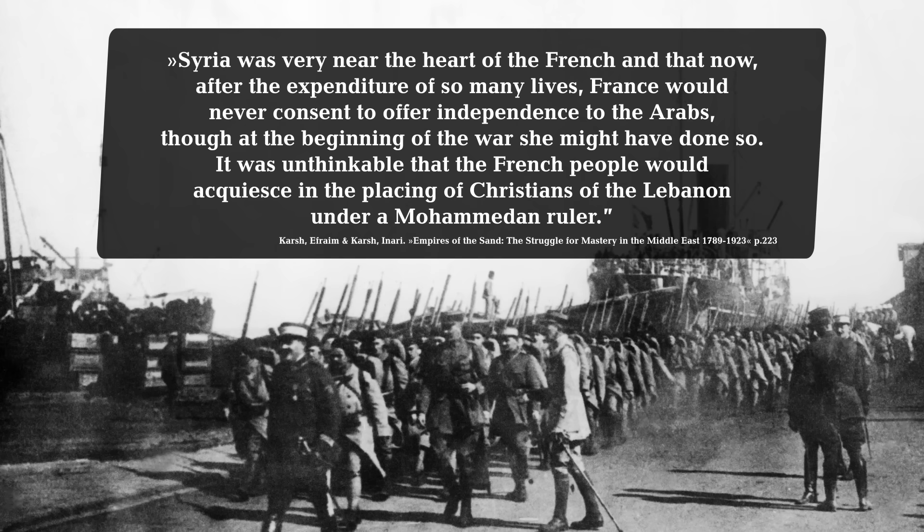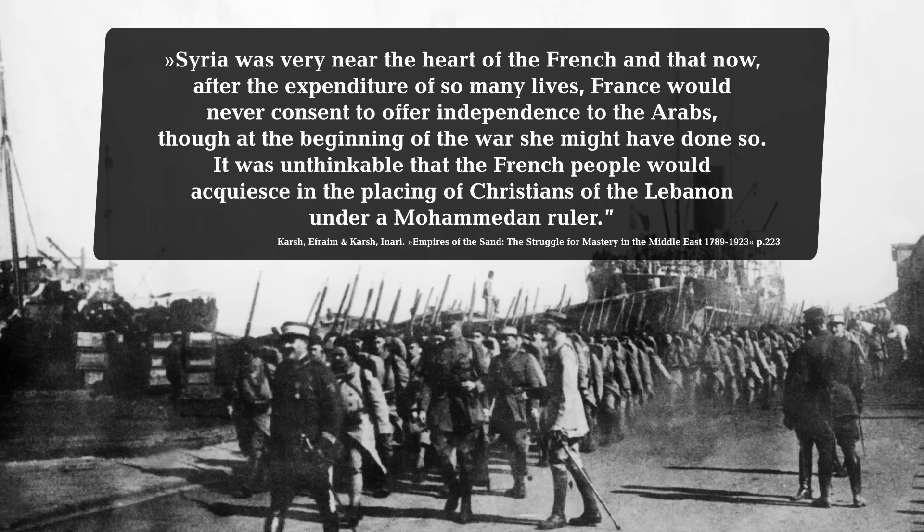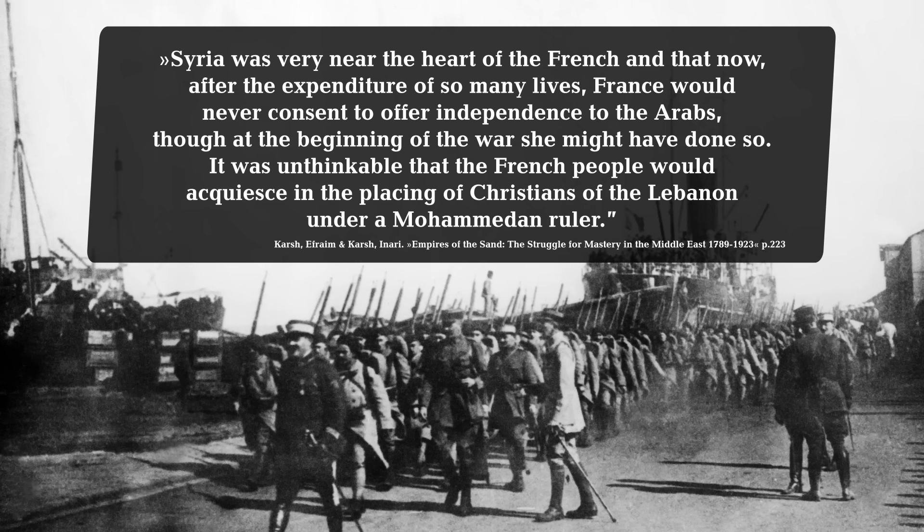French diplomat François-Georges Picot told his British allies: 'Syria was very near the heart of the French, and that now, after the expenditure of so many lives, France would never consent to offer independence to the Arabs, though at the beginning of the war she might have done so. It was unthinkable that the French people would acquiesce in the placing of Christians of the Lebanon under Mohammedan rule.' So by the end of 1915 there was growing tension between the British and the French because of the McMahon-Hussein agreement.